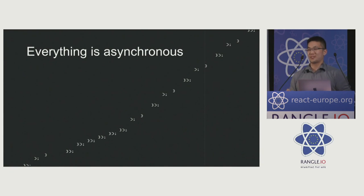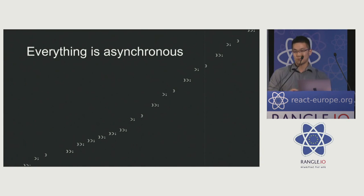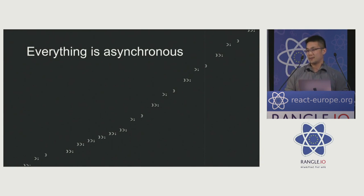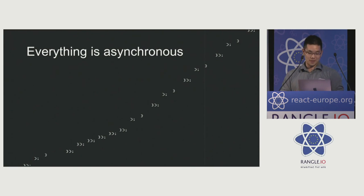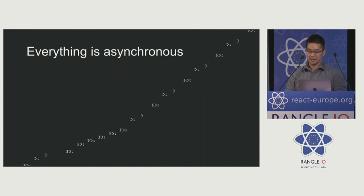The worker thread and the main thread communicate with a messaging protocol. This can get pretty awkward, especially back in the days of event-driven Backbone-like hell and imperative jQuery spaghetti code.